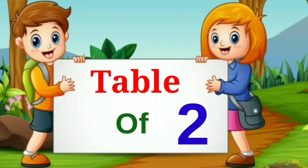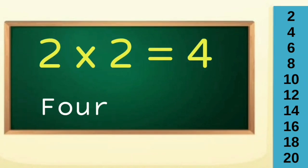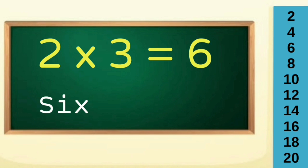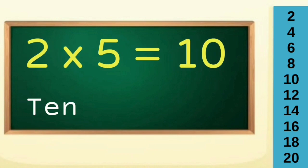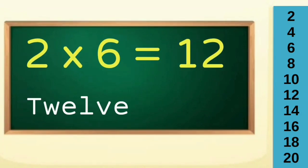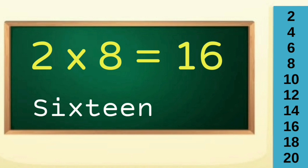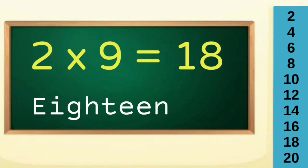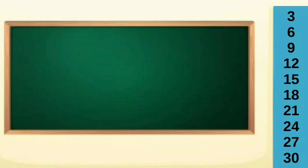Table of two: two ones are two, two twos are four, two threes are six, two fours are eight, two fives are ten, two sixes are twelve, two sevens are fourteen, two eights are sixteen, two nines are eighteen, two tens are twenty.